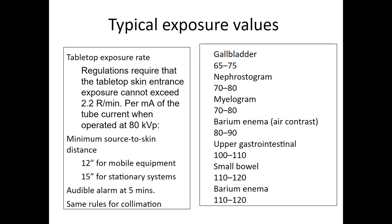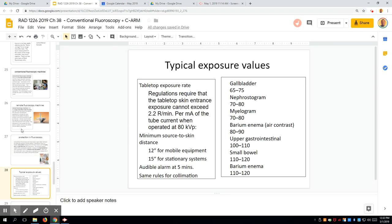Even at 5 mA for 5 minutes — that's 300 seconds times 5 — you're accumulating 1,500 mAs when the reminder goes off. There's also intermittent fluoro, where the fluoro turns on and off so quickly you don't notice it, but it saves dose without losing much image quality, which can reduce that total somewhat.